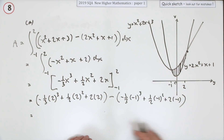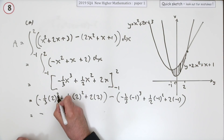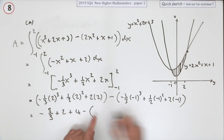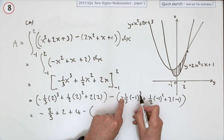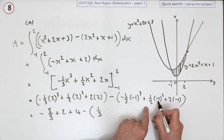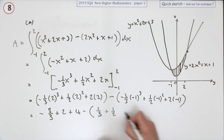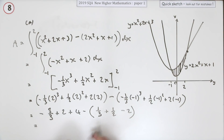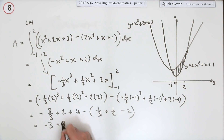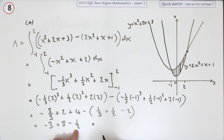Now work out what each part comes to. The first bracket: negative 8 over 3, plus 2, plus 4. For the second bracket, be careful with the negatives — negative 1 cubed is negative, so a negative times a negative makes it positive a third; negative 1 squared is positive so that's plus a half; and that's minus 2. The thirds combine: minus 8 thirds minus 1 third is minus 9 thirds, which is minus 3. The rest: 2 plus 4 plus 2 gives 8, minus a half.